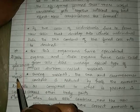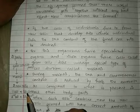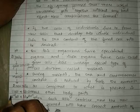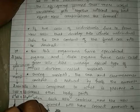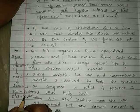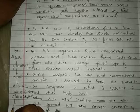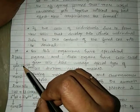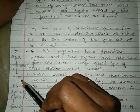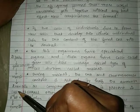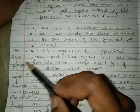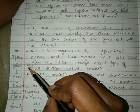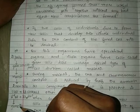After meiosis, 2 new cells will be formed, each with only 23 chromosomes instead of 23 pairs. These cells with half the number of chromosomes are called gametes. So germ cells undergo meiosis, and from 23 pairs we get one cell with 23 and another with 23.